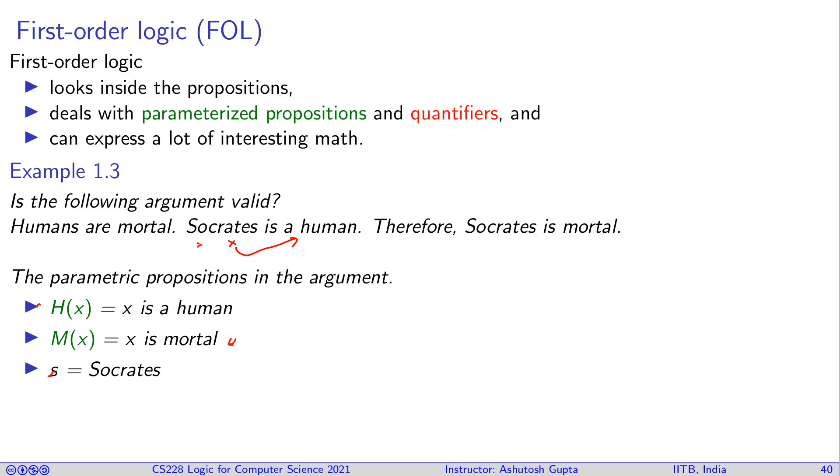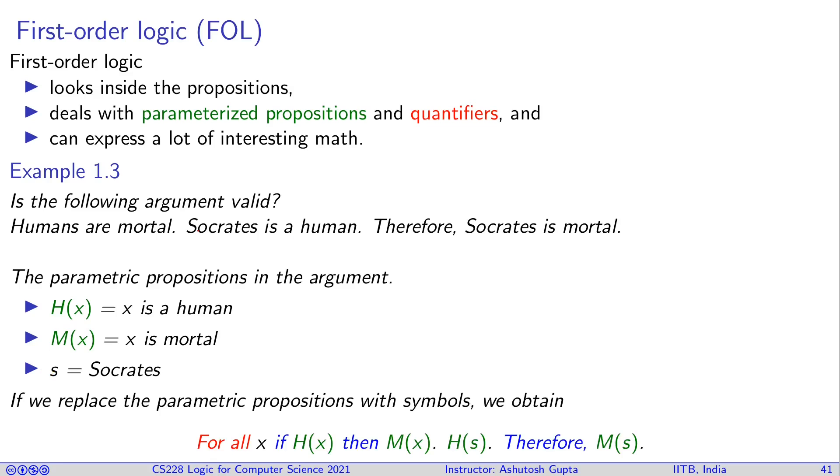And then you also need to have symbols for individuals, like Socrates, s. Now if you have these three symbols, two are parameterized propositions and one is for individual, you can symbolize your argument the way we have done for propositional logic. How do we do that? So here is the outcome.